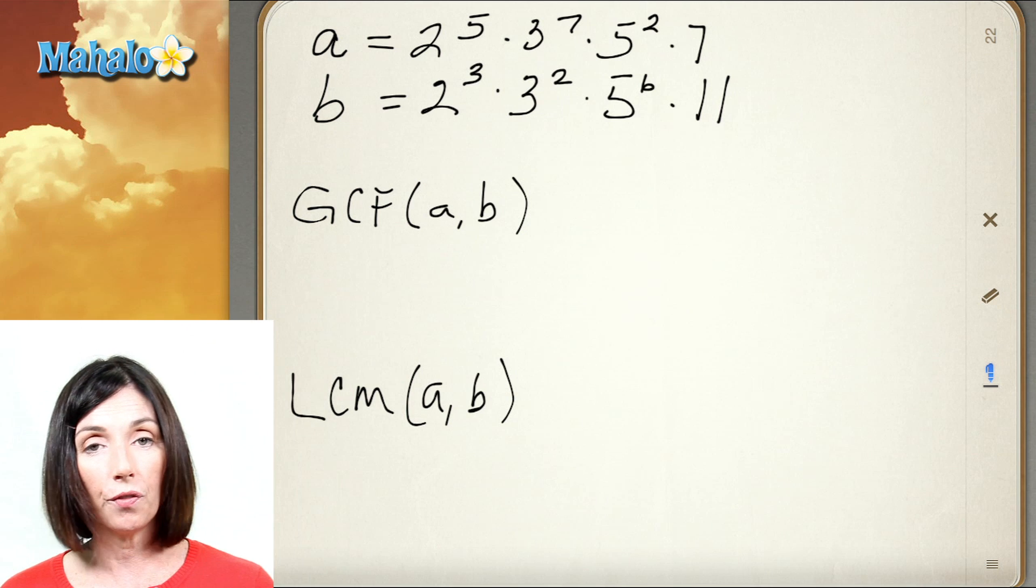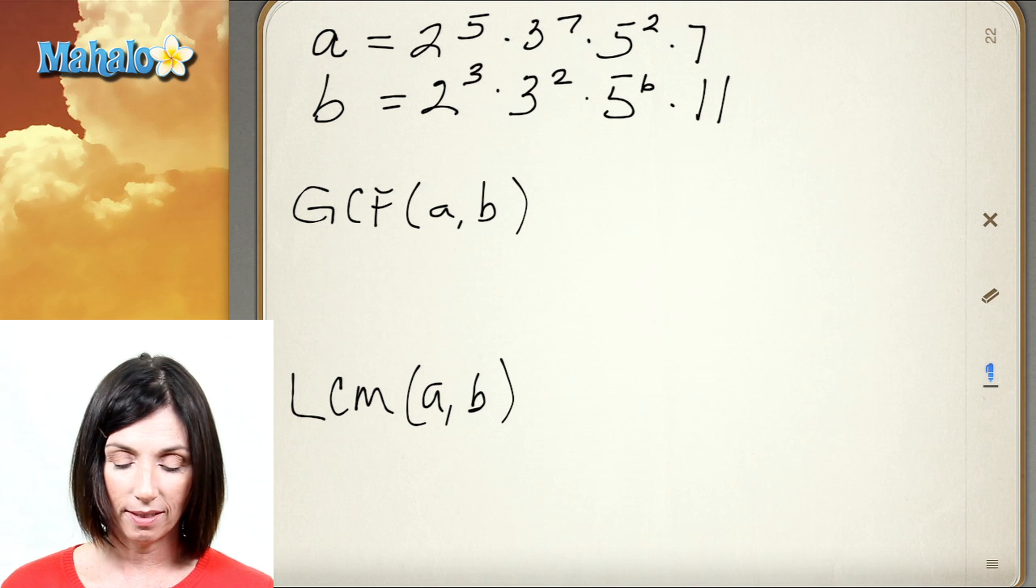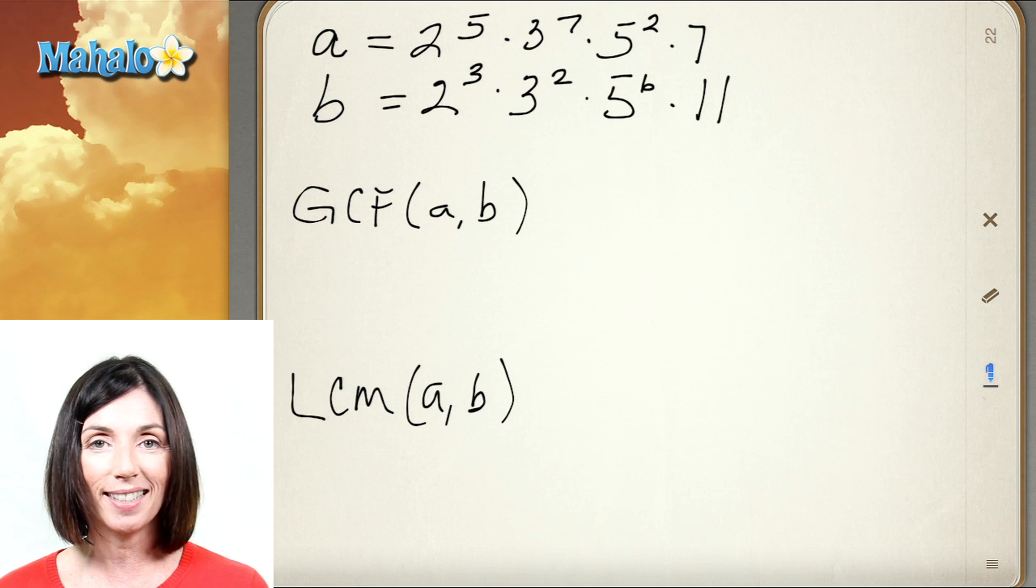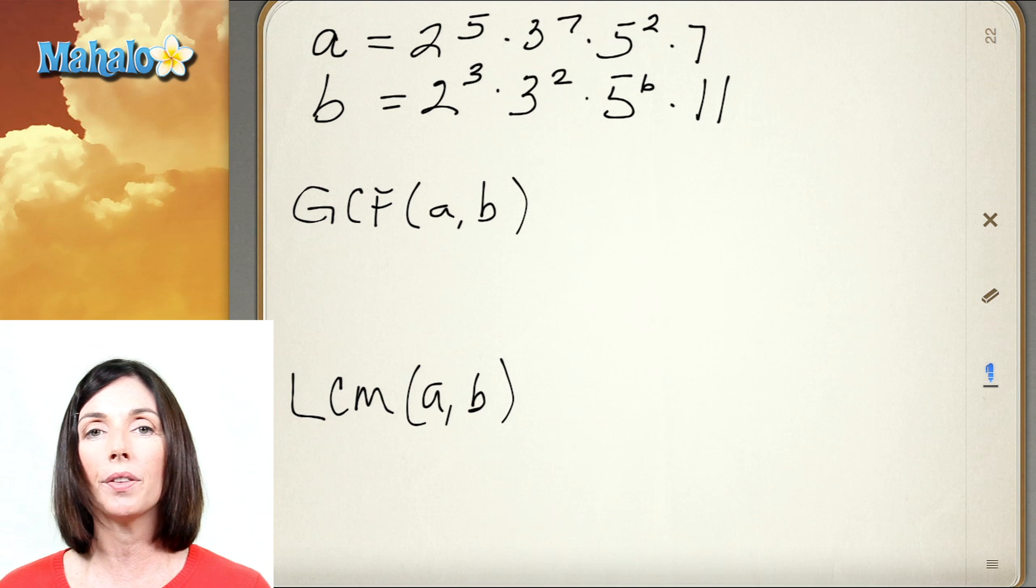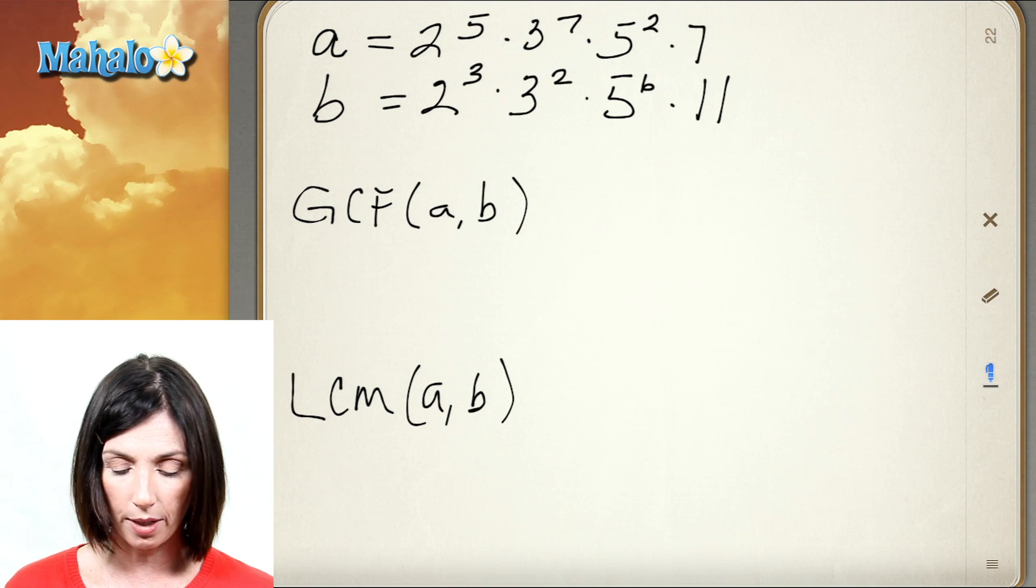So let's look at these two numbers A and B. A is 2 to the fifth times 3 to the seventh times 5 squared times 7, and B is 2 cubed times 3 squared times 5 to the sixth times 11. Now these are big numbers—I don't know what they are—but it doesn't really matter. I can find their greatest common factor and their least common multiple just by looking at these prime factorizations.